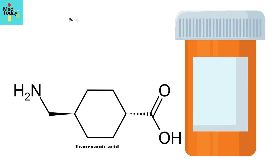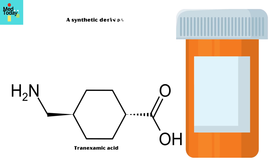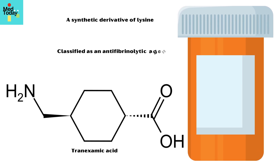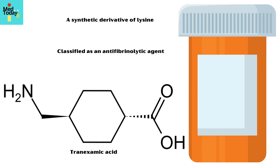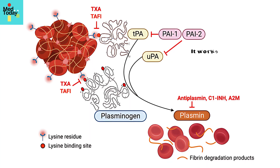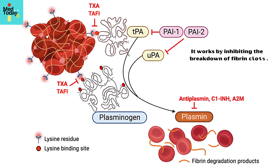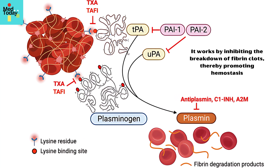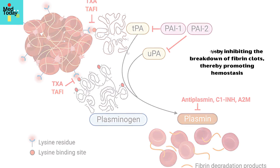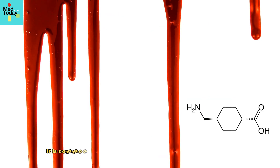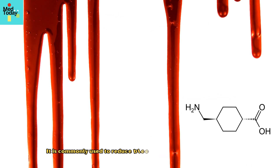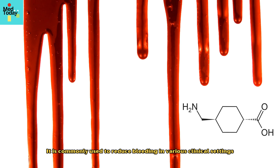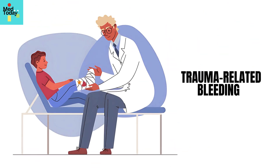Tranexamic acid is a synthetic derivative of lysine classified as an antifibrinolytic agent. It works by inhibiting the breakdown of fibrin clots, thereby promoting hemostasis. It is commonly used to reduce bleeding in various clinical settings including trauma-related bleeding.